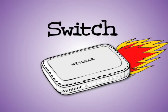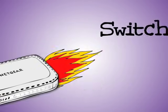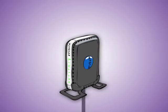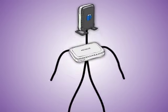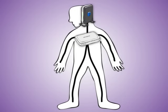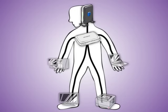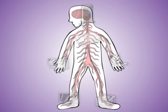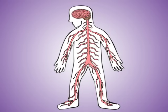A router, a switch, and network cables all come together to create a fast and reliable wired network that works a lot like your body's nervous system. Fortunately, you don't have to be super brainy to understand how it all works.